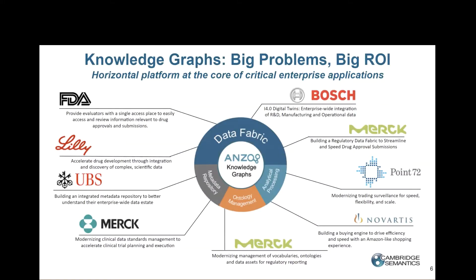When we talk about a knowledge graph, I like to think of it as a kernel to really several different use cases that are being deployed at scale. Traditionally, some of Anzo's and Cambridge Semantics' biggest customers were in pharmaceuticals, but we've been expanding rapidly into other verticals such as government, healthcare, manufacturing, and financial services. Let's take a look at one of those use cases.